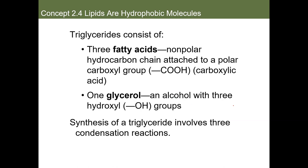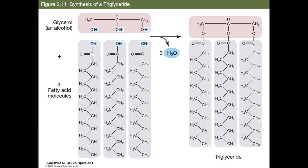Triglycerides are made of three fatty acids structurally speaking. Fatty acids are non-polar hydrocarbons that have a carboxylic acid group on the end, which gives them a slight polar region. The carboxyl group is a polar group, so they are slightly polar at the top but non-polar overall. As seen here, you have glycerol — a common alcohol — and the three fatty acids; the OH and H groups split off to make water.